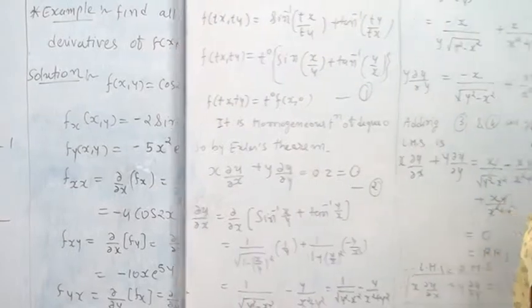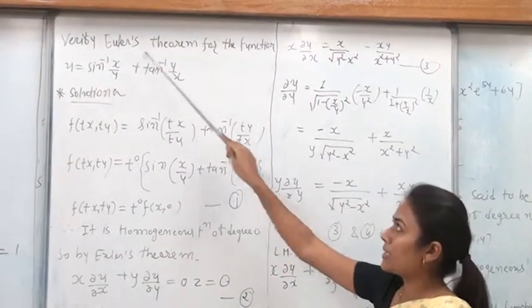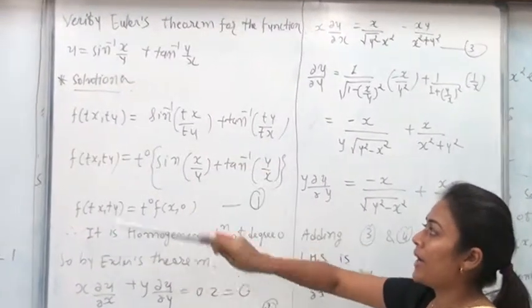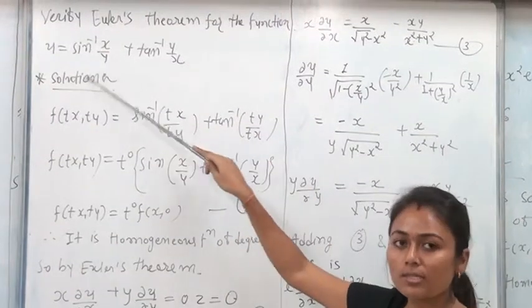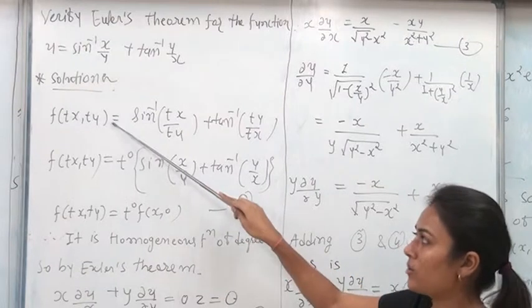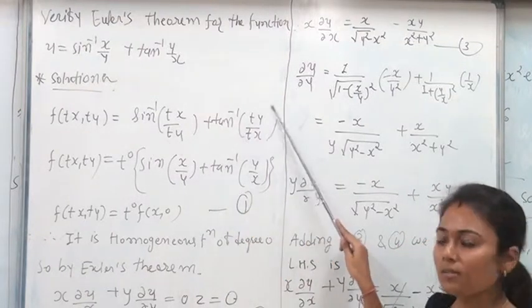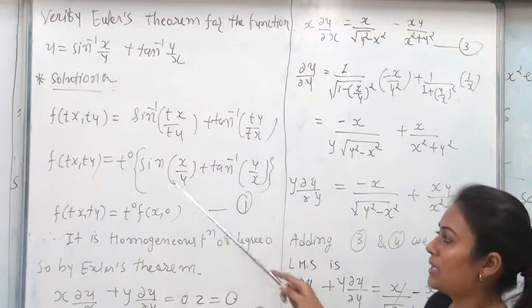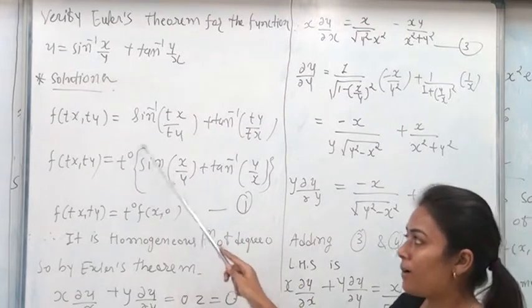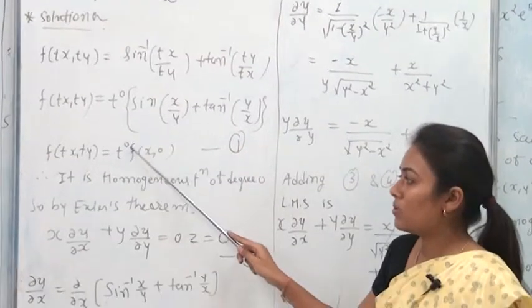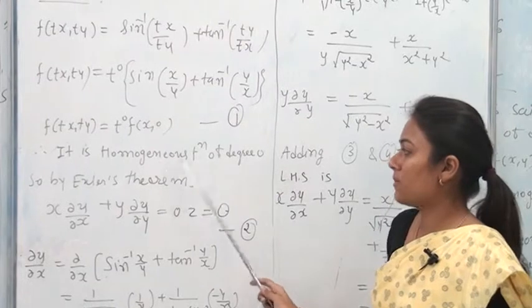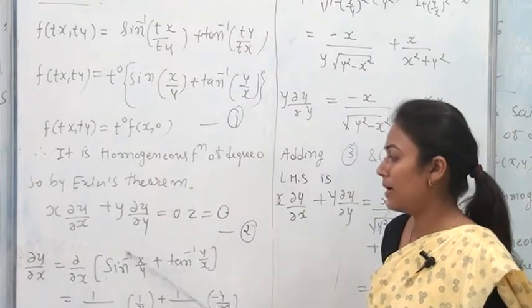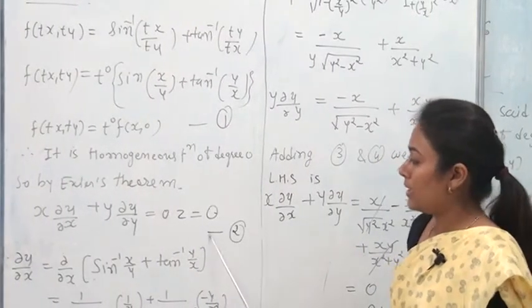Example: Verify Euler's theorem for u = sin⁻¹(x/y) + tan⁻¹(y/x). First check if u is homogeneous: f(tx, ty) = sin⁻¹(tx/ty) + tan⁻¹(ty/tx) = sin⁻¹(x/y) + tan⁻¹(y/x) = t⁰·f(x, y). So it is a homogeneous function of degree 0. By Euler's theorem: x·∂u/∂x + y·∂u/∂y = 0·u = 0.